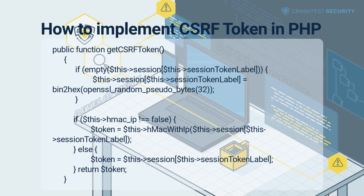The PHP contact form is then rendered to input details such as subject, message, name, and email. The form should also contain the generated token within a hidden field, CSRF token. Once the user clicks on the submit button, the application performs a jQuery form validation, after which the parameters are posted to PHP. Once the contact form is submitted, the form action executes a script that compares the embedded token with the one stored in the session. If the tokens match, the application will serve the user's request; if not, PHP will acknowledge the user with an error message.